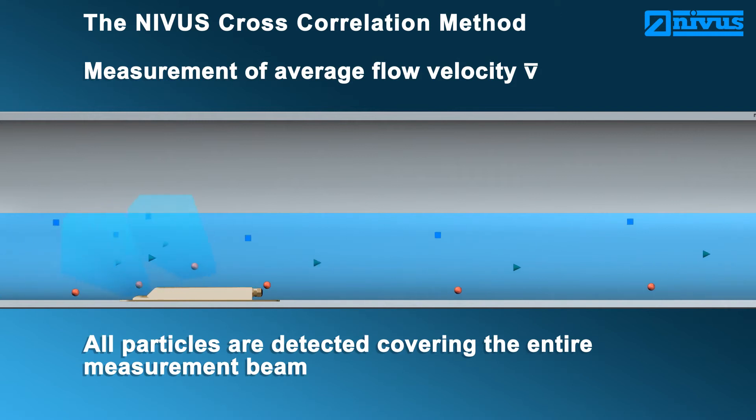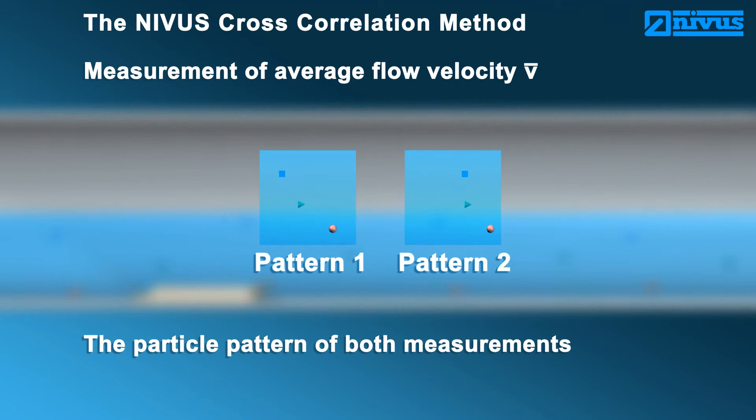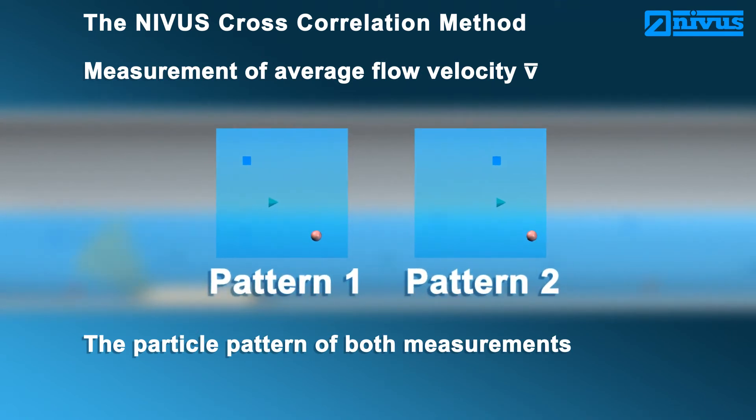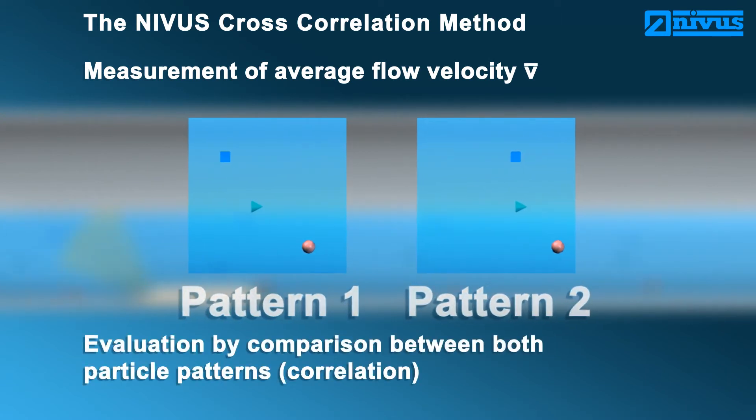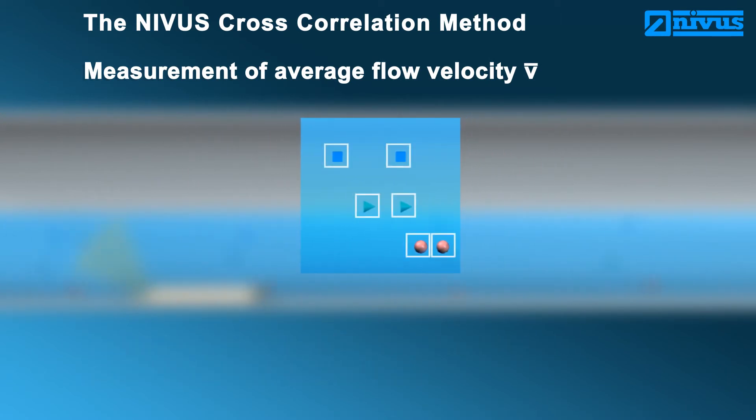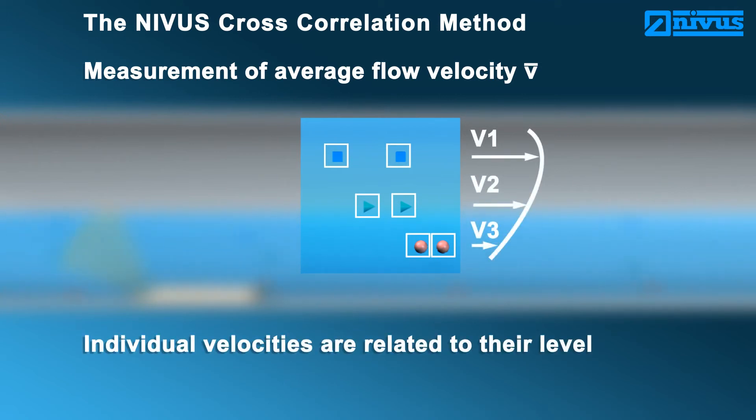The particle images are evaluated by comparing correlation to each other. This comparison repeats within a few milliseconds. In addition to the individual particle velocities, the relation to the flow level is available. Due to this, it is possible to represent the flow profile directly.